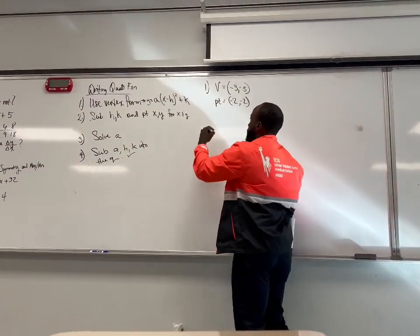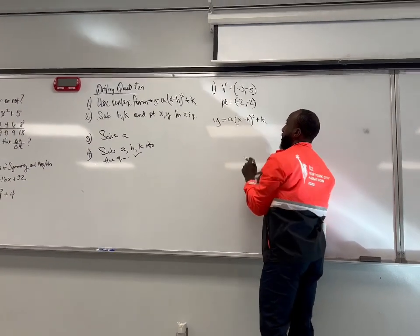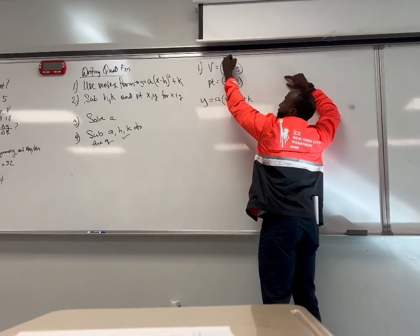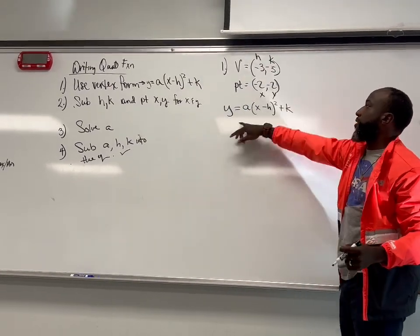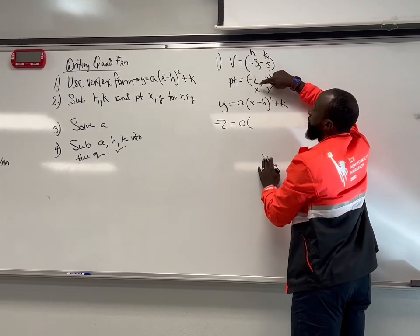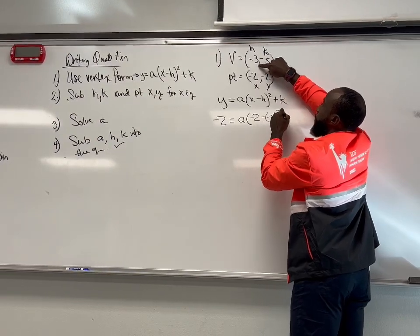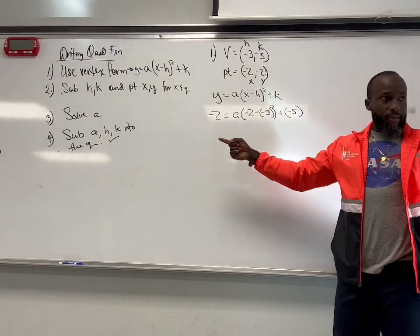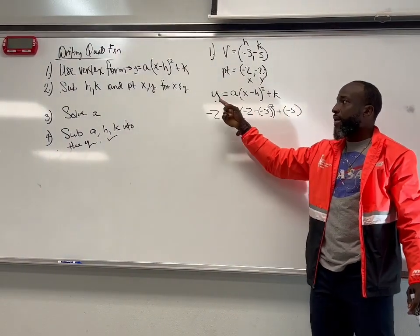Step 1, we're using this vertex formula: y equals a times x minus h squared plus k. This is the formula that we have. The vertex gives us negative 3 as h, negative 5 as k, negative 2 as x, and negative 2 as y. So we substitute all of these values into the equation. So: negative 2 equals a times negative 2 minus h squared plus k. We substituted h, k, x, and y.